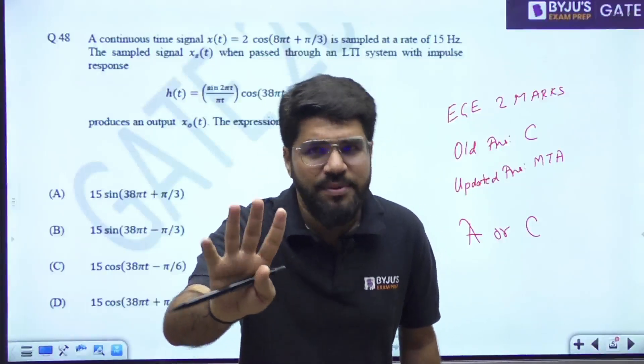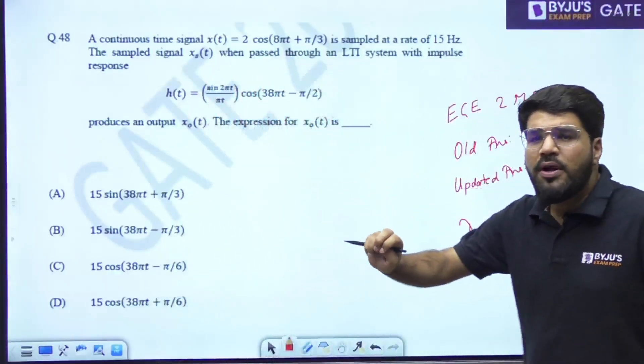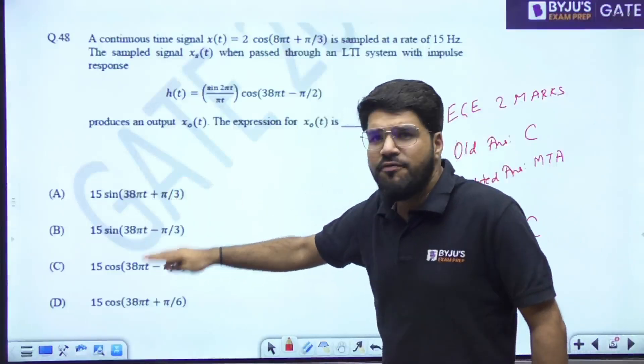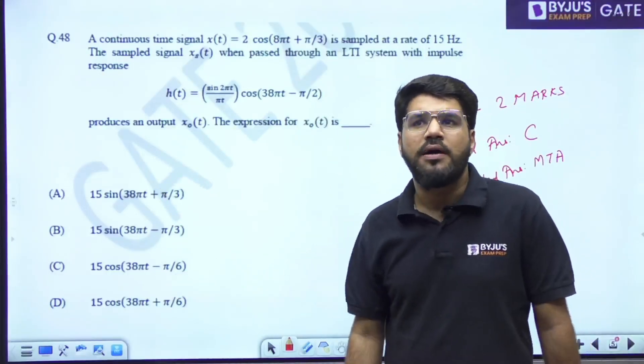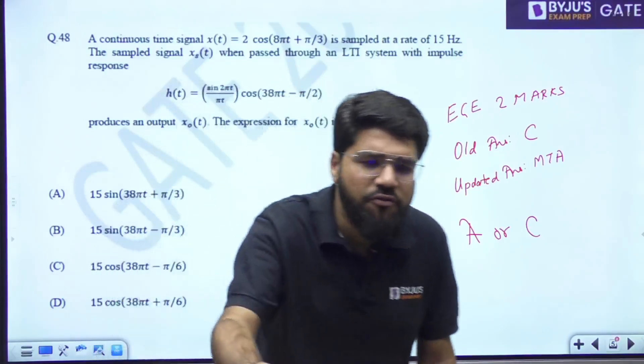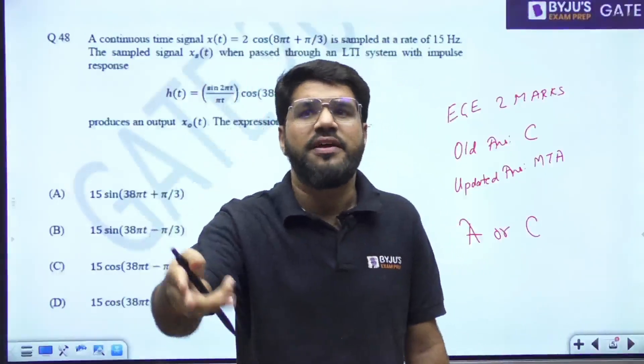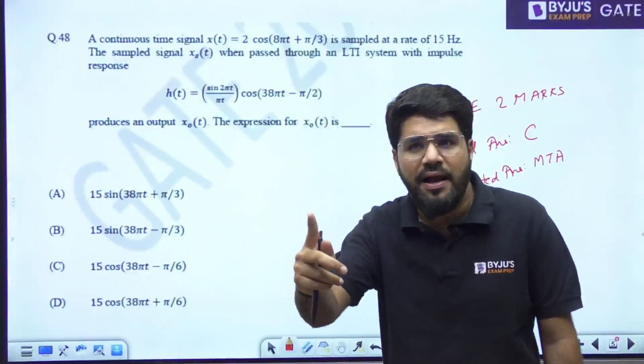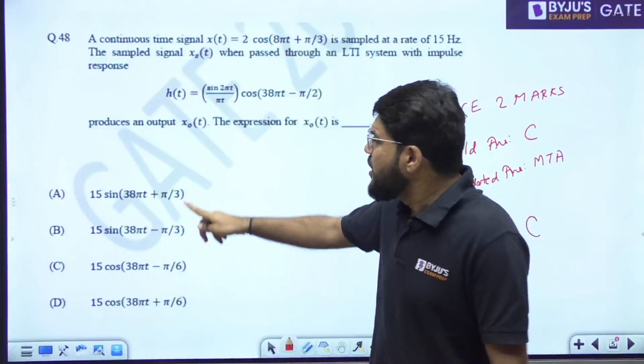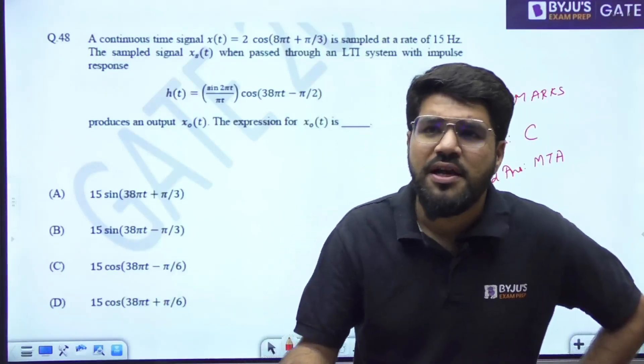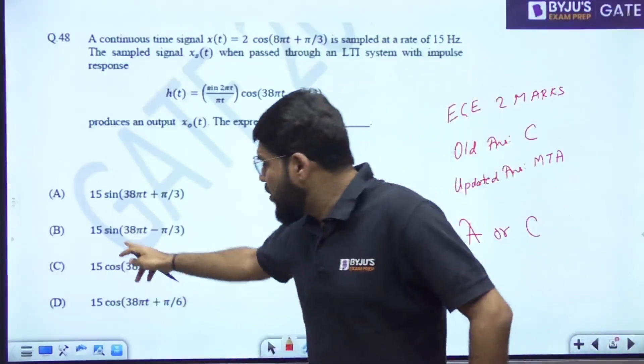But previously what they have done is those who mark A, those who mark C, if you mark any of them, they will allow two marks. Why MTA for this? I really don't understand, because it's a software. You can feed the software that if any student has marked A or C - MCQ hai na - if A ki mark milega, someone has marked. So if A is marked or C is marked anywhere, any one of the mark, give two marks. If nothing is marked, zero. If B or D is marked, give negative marks. That should have happened.